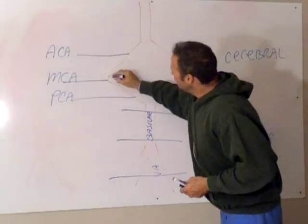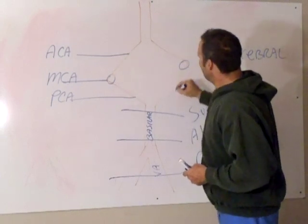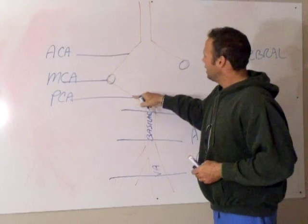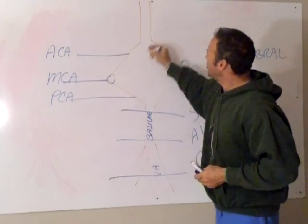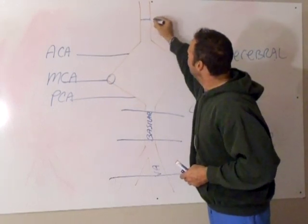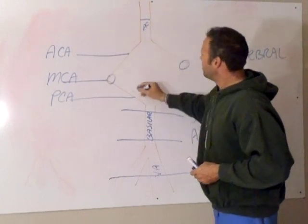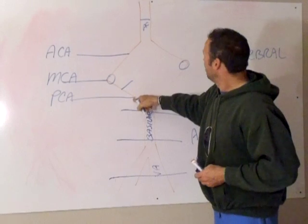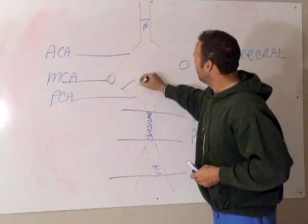Now the only things we have left are our internal carotid, which is there and there. The internal carotid gives off the MCA and our communicating arteries. Your anterior is here, and your posterior communicating is the section between the posterior cerebral artery and the middle cerebral artery.